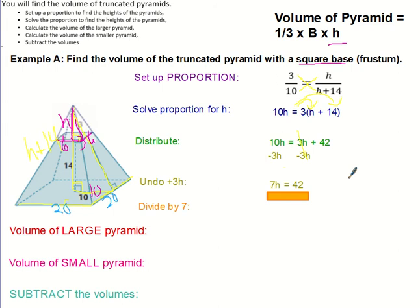7h equals 42. The opposite of multiplying by 7 is dividing by 7, so I'm going to divide by 7 on both sides. 7 divided by 7 cancels. You get 1h. And 42 divided by 7 is 6. So h equals 6. The height of that pink pyramid is 6.